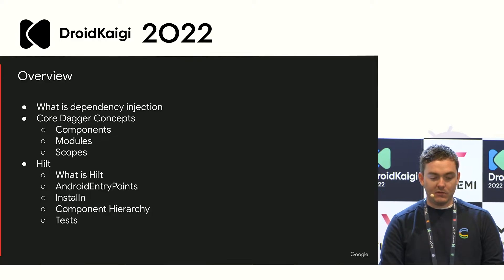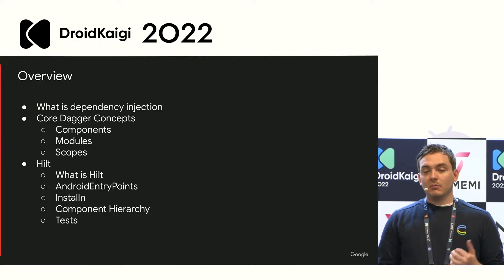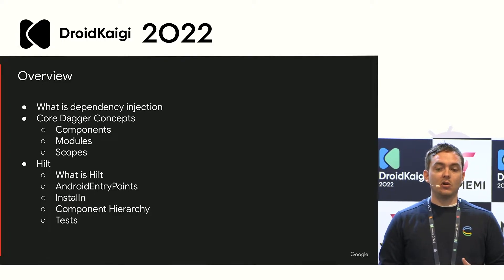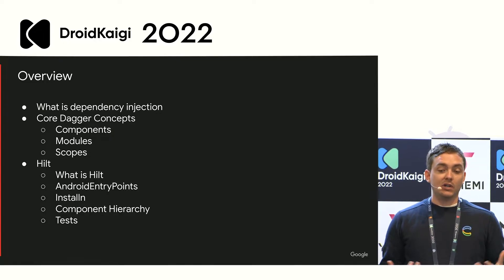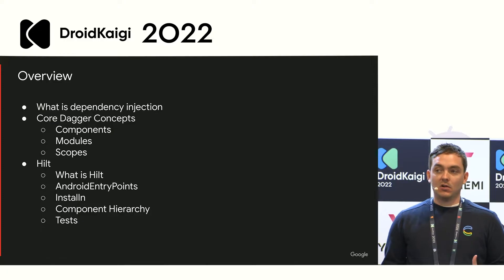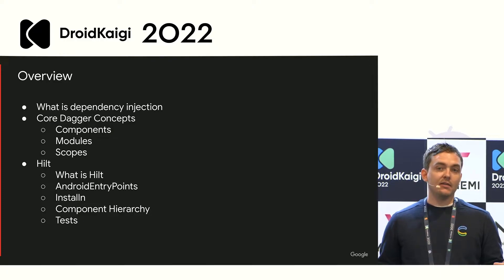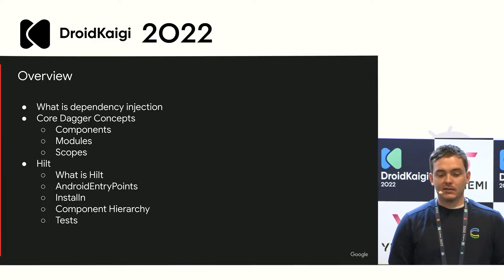Here's a quick overview of what we're going to talk about today. I'm going to go over what dependency injection is. We're going to talk about some core Dagger concepts — components, modules, and scopes. Then we'll dive into Hilt: what it is, what Android entry points are, what the install-in portion of Hilt is, the component hierarchy Hilt provides, and briefly about tests.